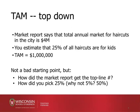A top-down approach to this might be that you find some kind of market report that says the total annual market for haircuts in the city you're targeting is, say, $4 million. You've found this number through Google searching or some kind of market analysis from business libraries, and you have this number that says this is the total market for all haircuts. And then you come up with some kind of estimate, like 25% of all haircuts are for kids — which doesn't seem too unreasonable offhand — and that would give you a total addressable market of $1 million a year.